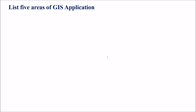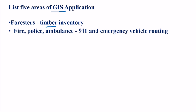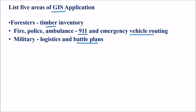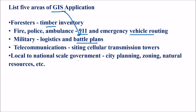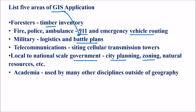List five areas of GIS application. GIS finds its application almost everywhere. For foresters, like timber inventory; for fire, police, ambulance, 911 emergency vehicle routing; military for logistics and battle plans; telecommunications like siting cellular transmission towers at local to national scale; government city planning, zoning, natural resources planning; and academia — used by many disciplines outside of geography, including computer science, civil engineering, and every engineering discipline.